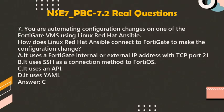Question 7: You are automating configuration changes on one of the FortiGate VMs using Linux Red Hat Ansible. How does Linux Red Hat Ansible connect to FortiGate to make the configuration change? A. It uses a FortiGate internal or external IP address with TCP port 21. B. It uses SSH as a connection method to FortiOS. C. It uses an API. D. It uses YAML. Answer: C.